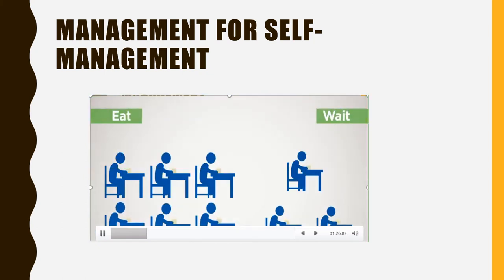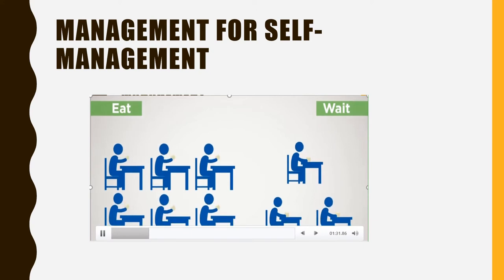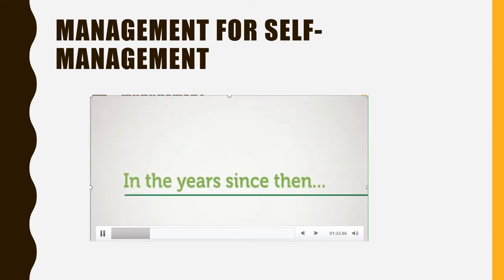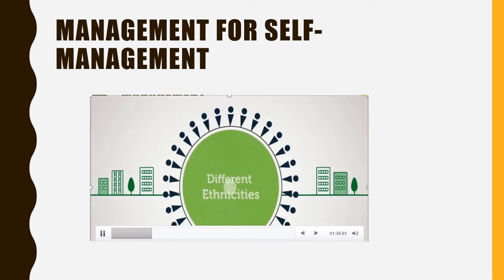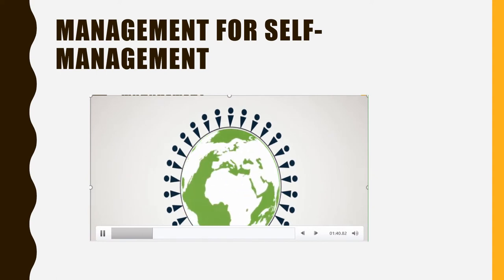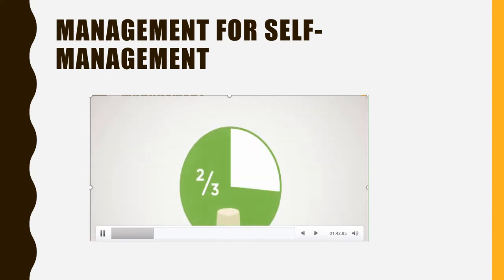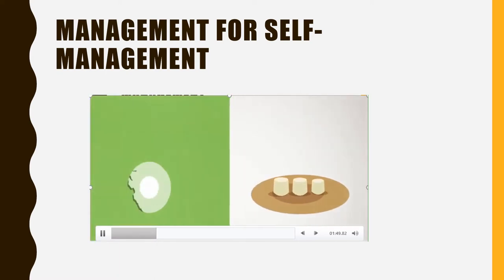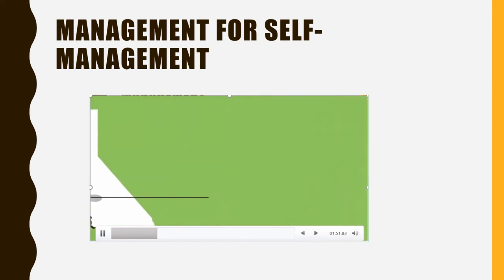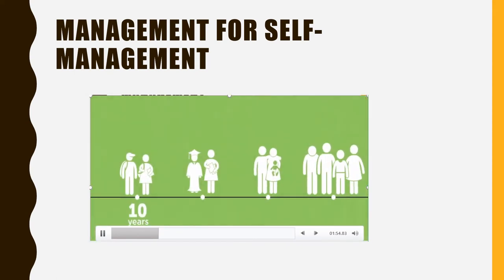Mischel found that despite their best efforts, two-thirds of the kids ate the marshmallow before the researcher came back. The experiment has since been replicated many times with kids from different communities, ethnicities, and backgrounds in countries all over the world — and typically, two-thirds of the kids eat the marshmallow. Here's where the results get really interesting: his team tracked down all the marshmallow test kids they could find 10, 20, 30, and 40 years later, and found some startling results.